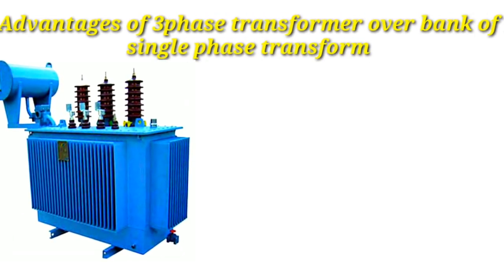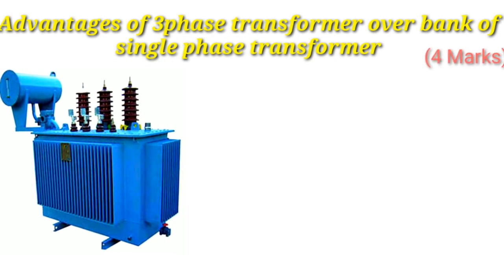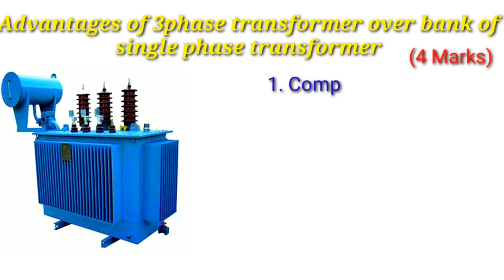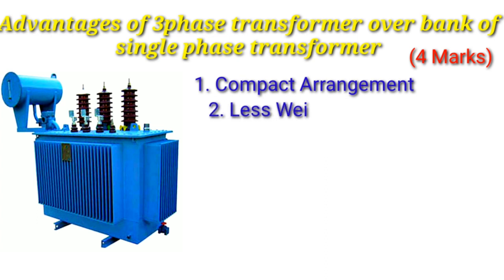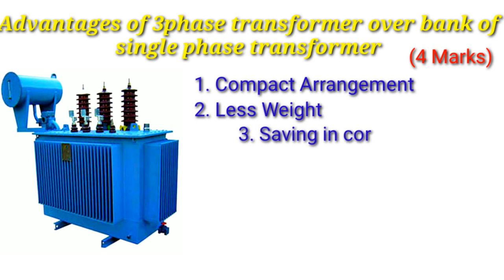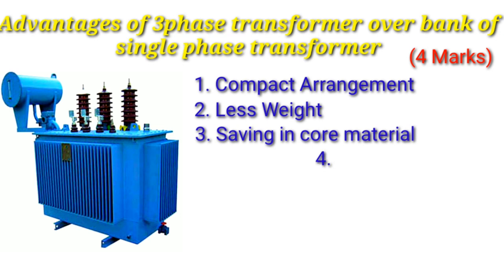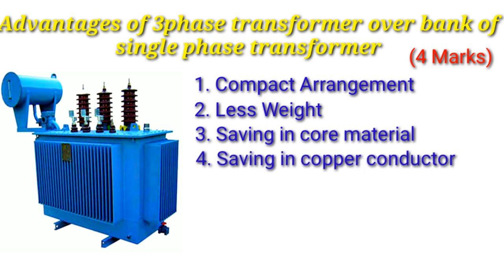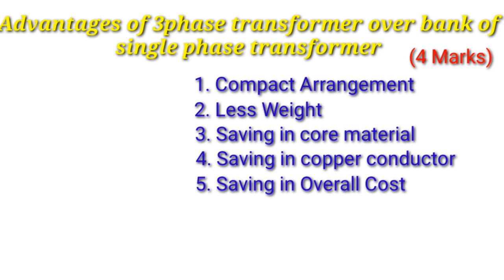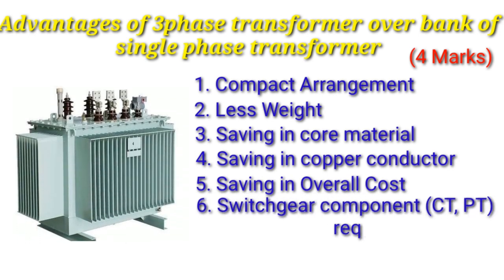These are the disadvantages of the bank of three single-phase transformers. Now let's see the advantages of a three-phase transformer over a bank of single-phase transformers — this question is asked in exams for four marks. First point: compact arrangement, meaning less space required. Second point: less weight. Third point: saving in electromagnetic core material, as a single three-phase transformer uses only one core. Fourth point: saving in copper conductor since only one core is used. Fifth point: saving in overall cost.